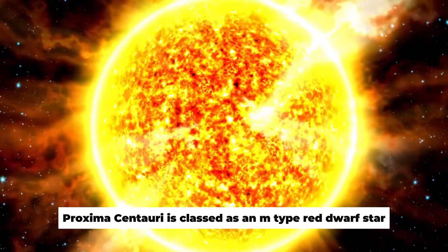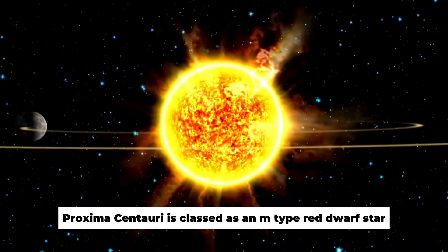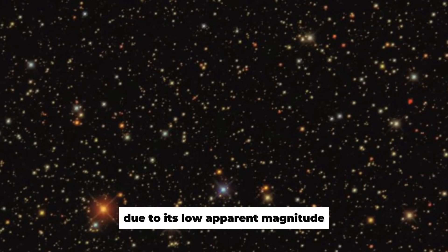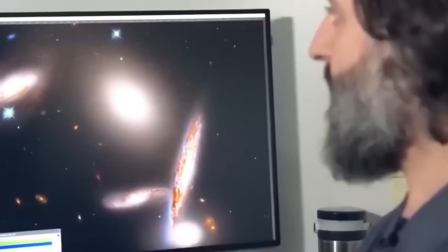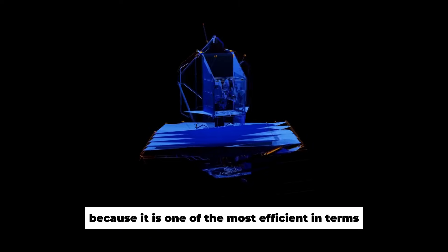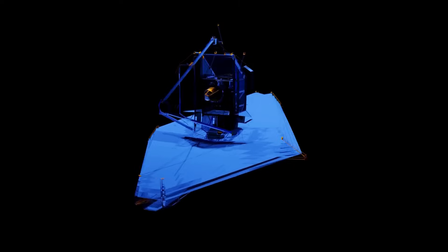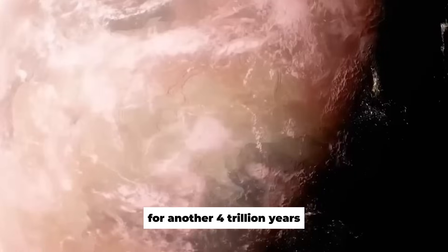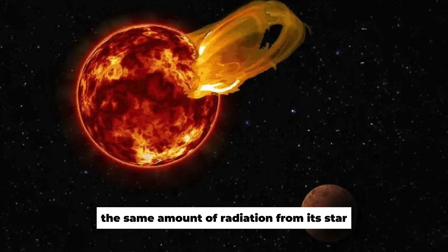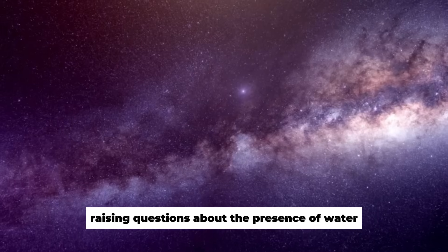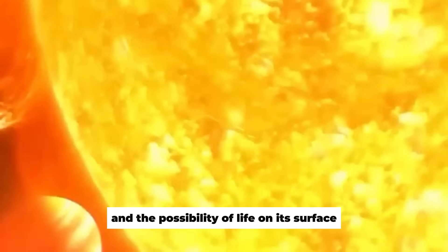Proxima Centauri is classed as an M-type red dwarf star. Despite being our nearest star neighbor due to its low apparent magnitude, it is not visible to the human eye. It is, nonetheless, a star worth admiring because it is one of the most efficient in terms of energy generation and will continue to be a main sequence star for another 4 trillion years. It receives roughly the same amount of radiation from its star as Earth does from the Sun, raising questions about the presence of water and the possibility of life on its surface.